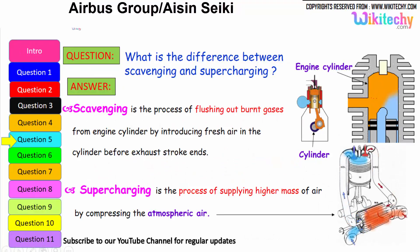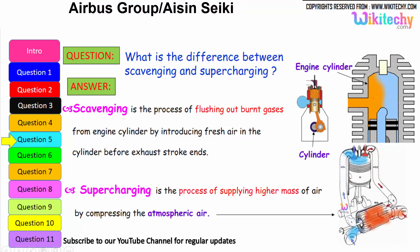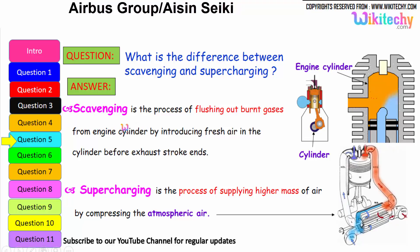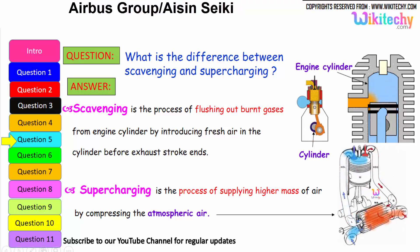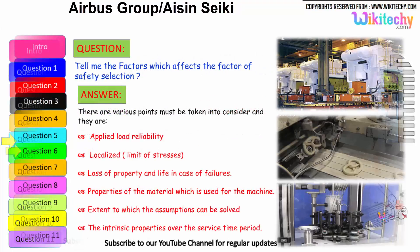Let us move on to the next question: what is the difference between scavenging and supercharging? Scavenging is the process of flushing out the burnt gases from the engine cylinder by introducing fresh air in the cylinder before the exhaust stroke ends. Supercharging is the process of supplying high atmospheres of air by compressing the atmospheric air. You are able to see a high pressure of air is injected into the cylinder to compress the atmospheric air.